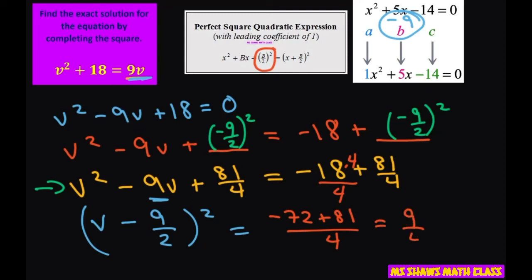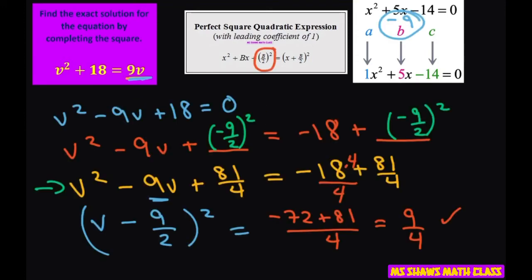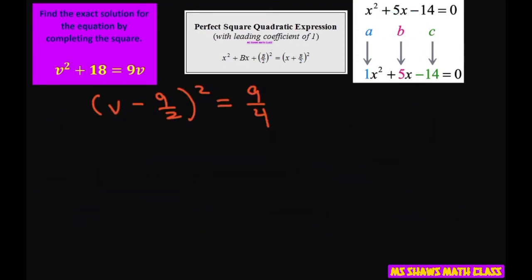So I'm going to rewrite this now. So we have 9 fourths here and let's rewrite this. We have v minus 9 halves squared equals 9 fourths. I believe, let me double check. Yes, my short-term memory is not very good.